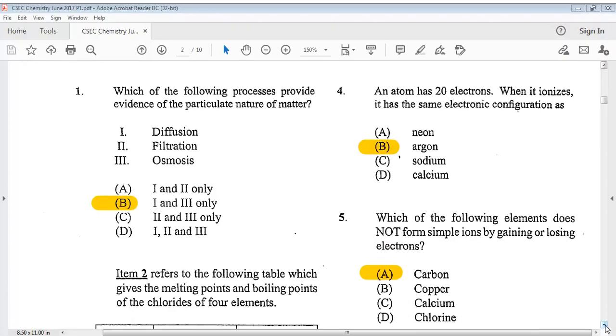The first question says, which of the following processes provide evidence of the particulate nature of matter? 1. Diffusion, 2. Filtration, 3. Osmosis. So the answer is B, 1 and 3 only.